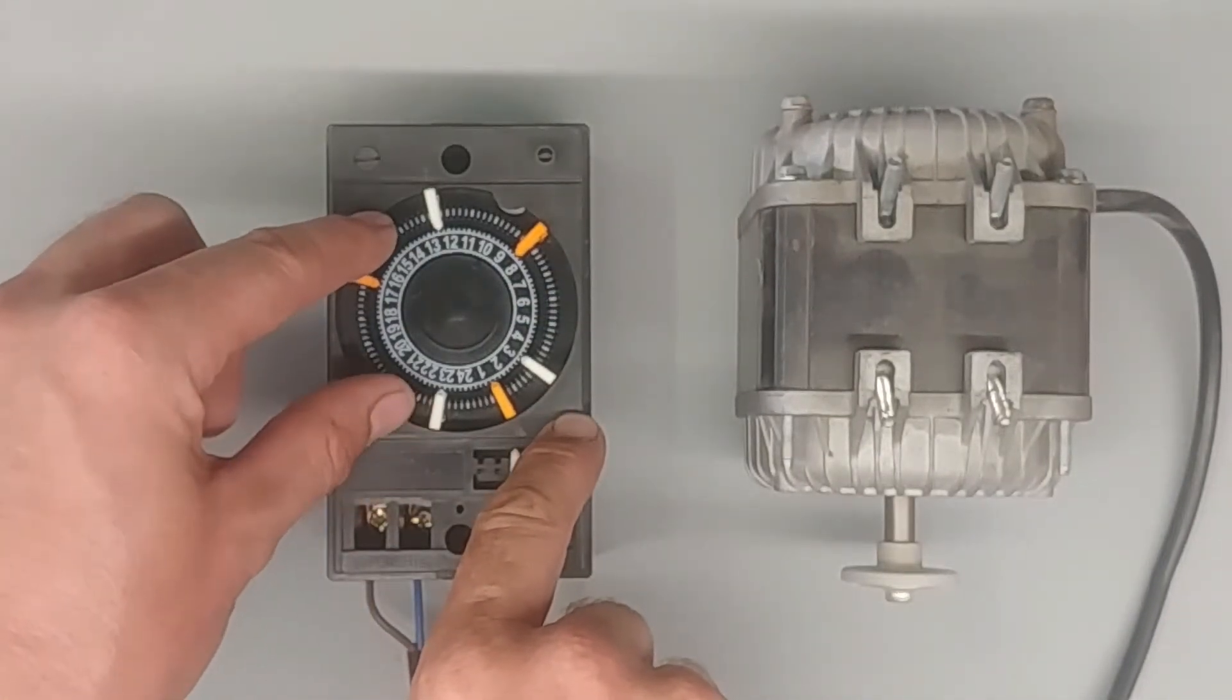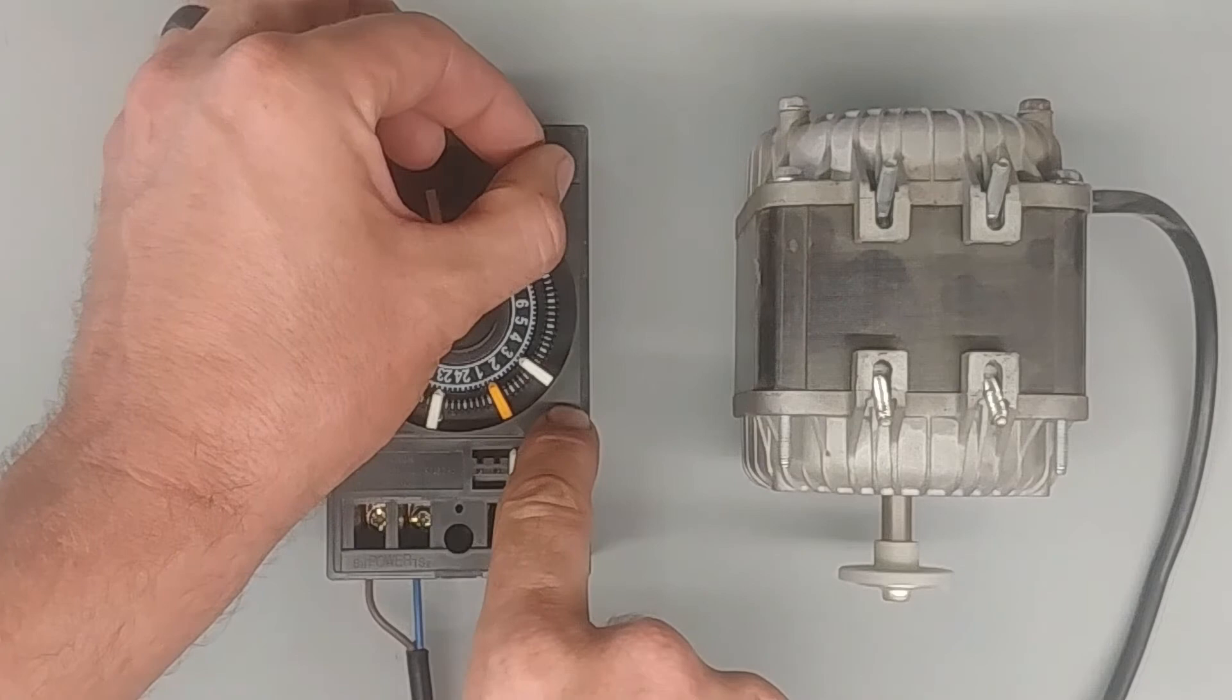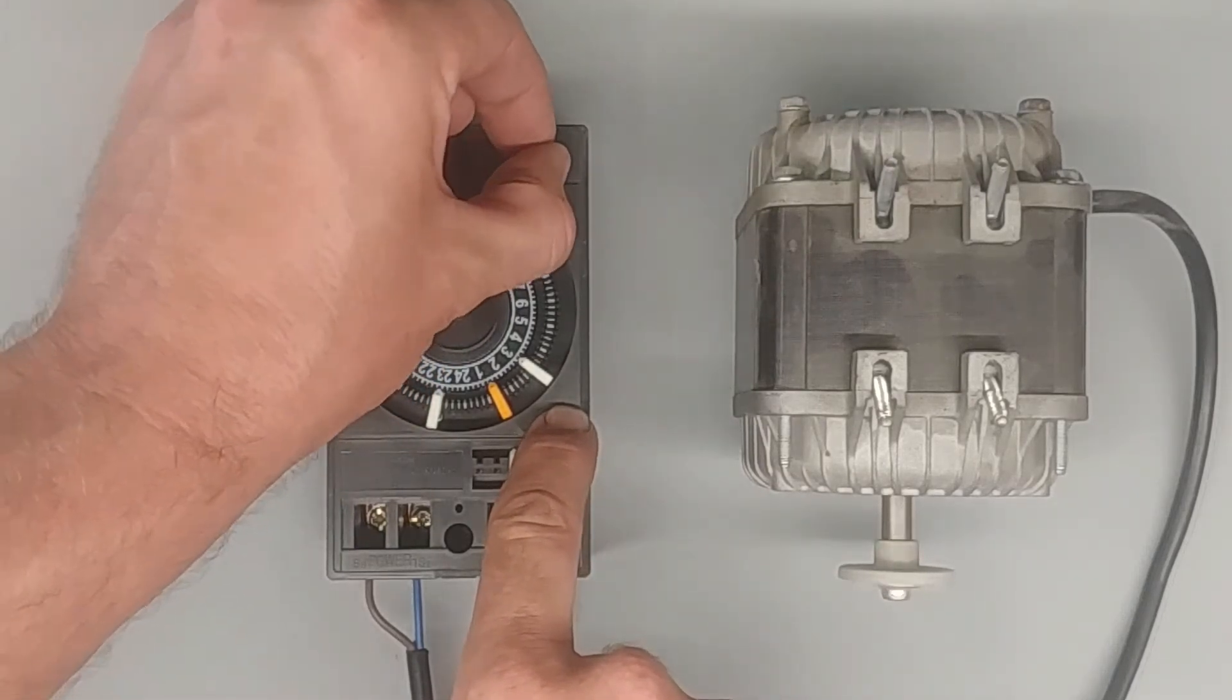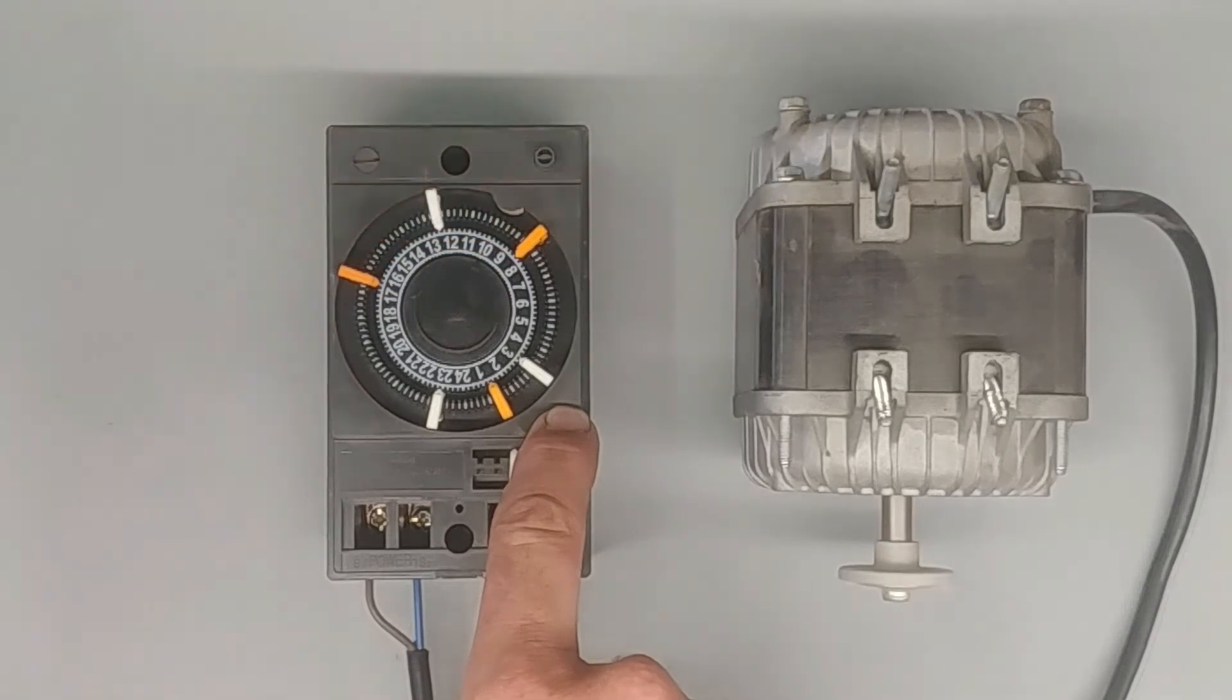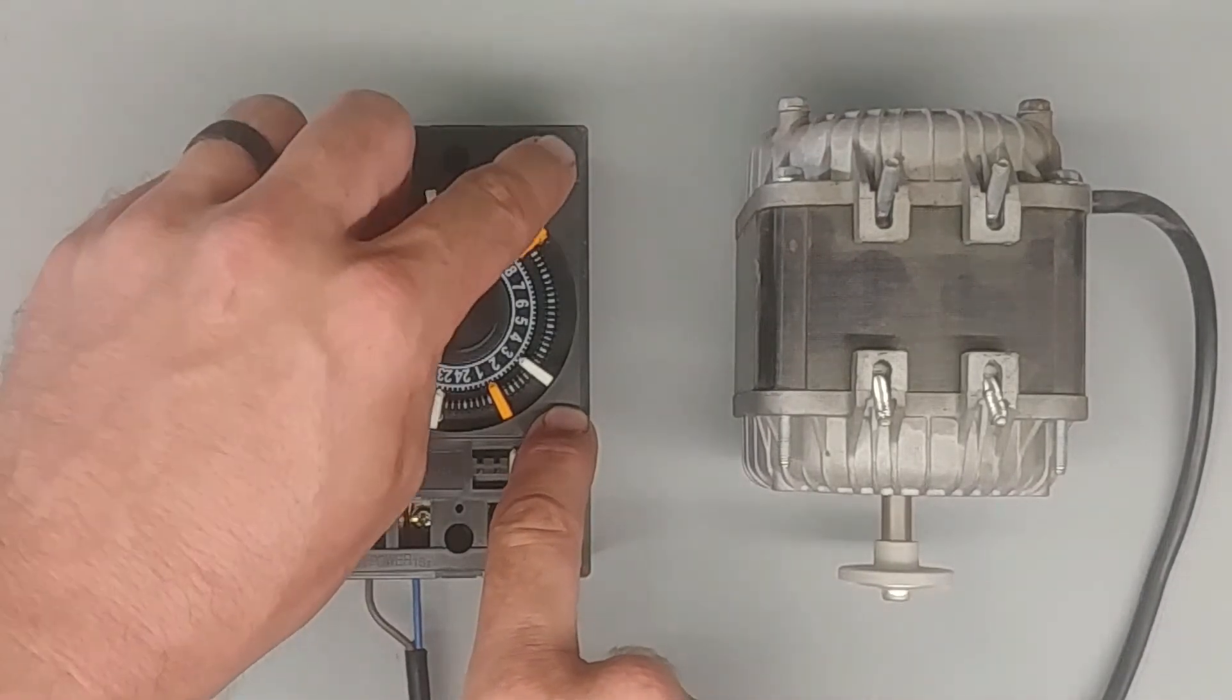Also, there is a little manual switch at the top here. Just press it in and turn it clockwise, and that's manual override.